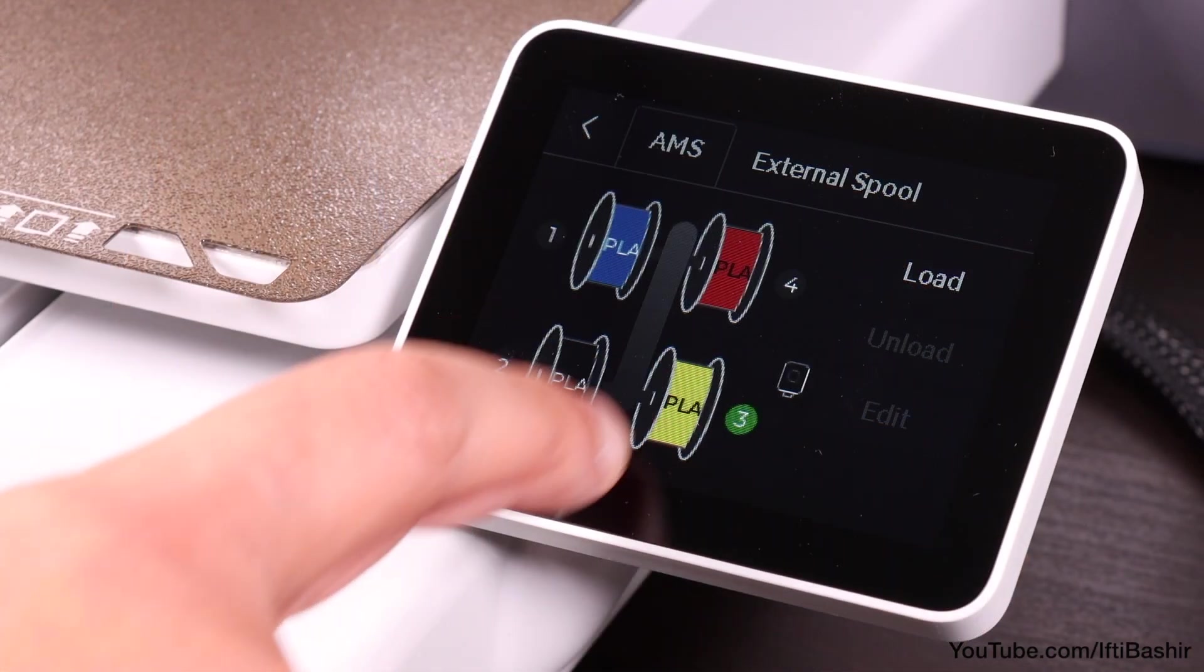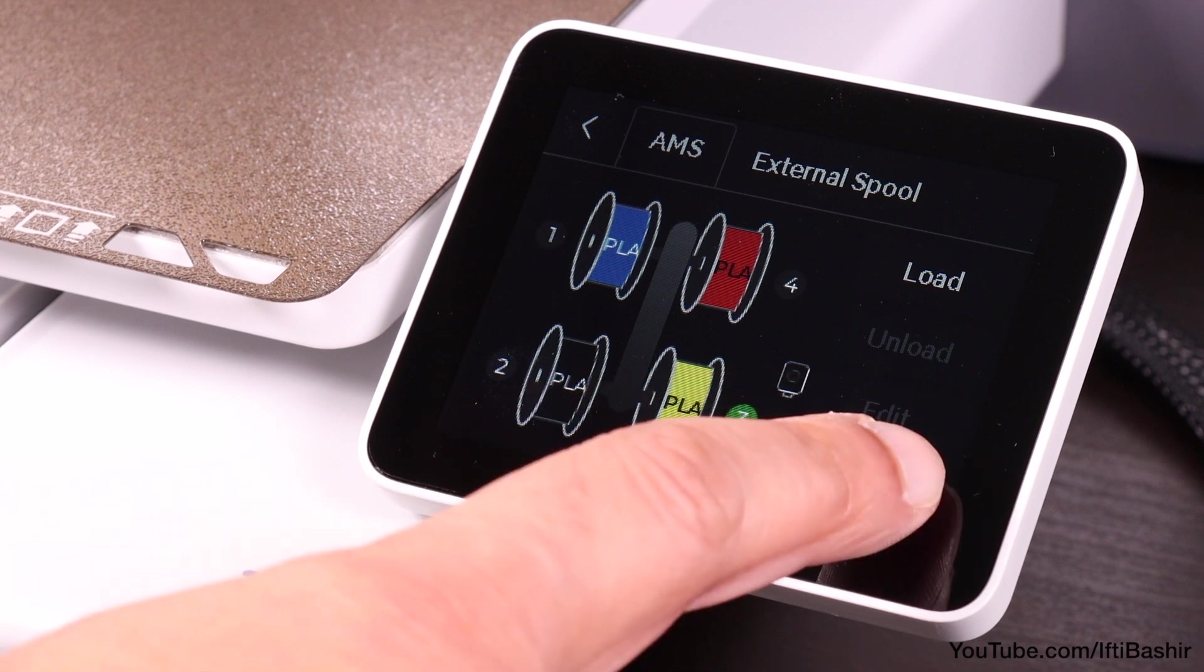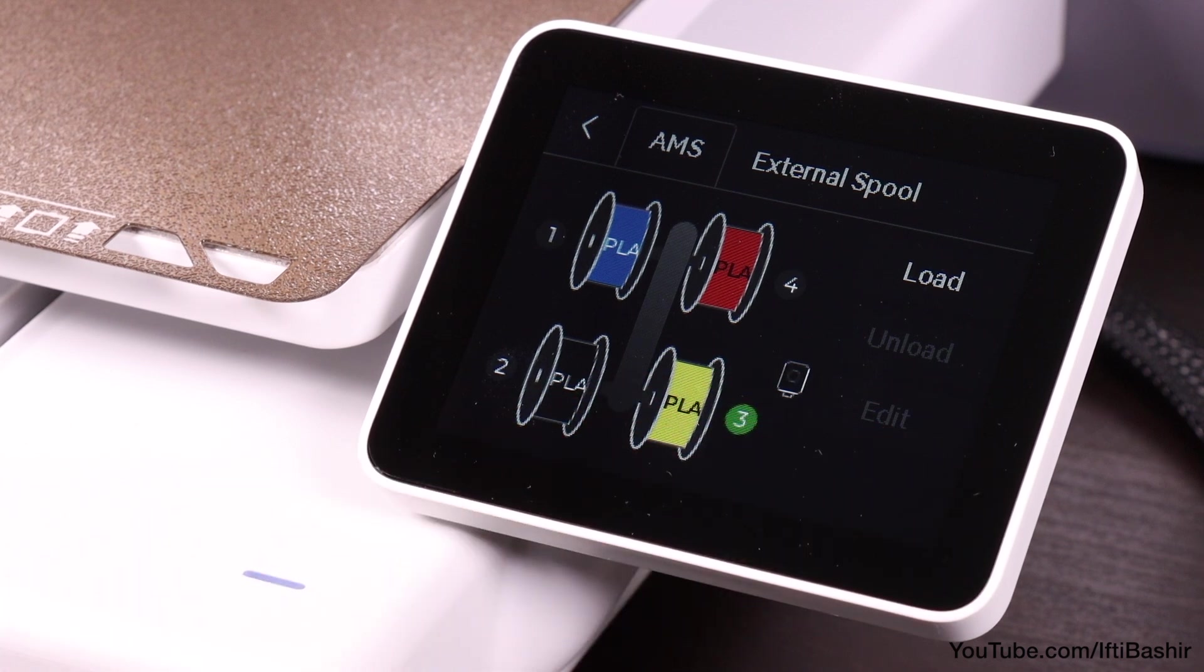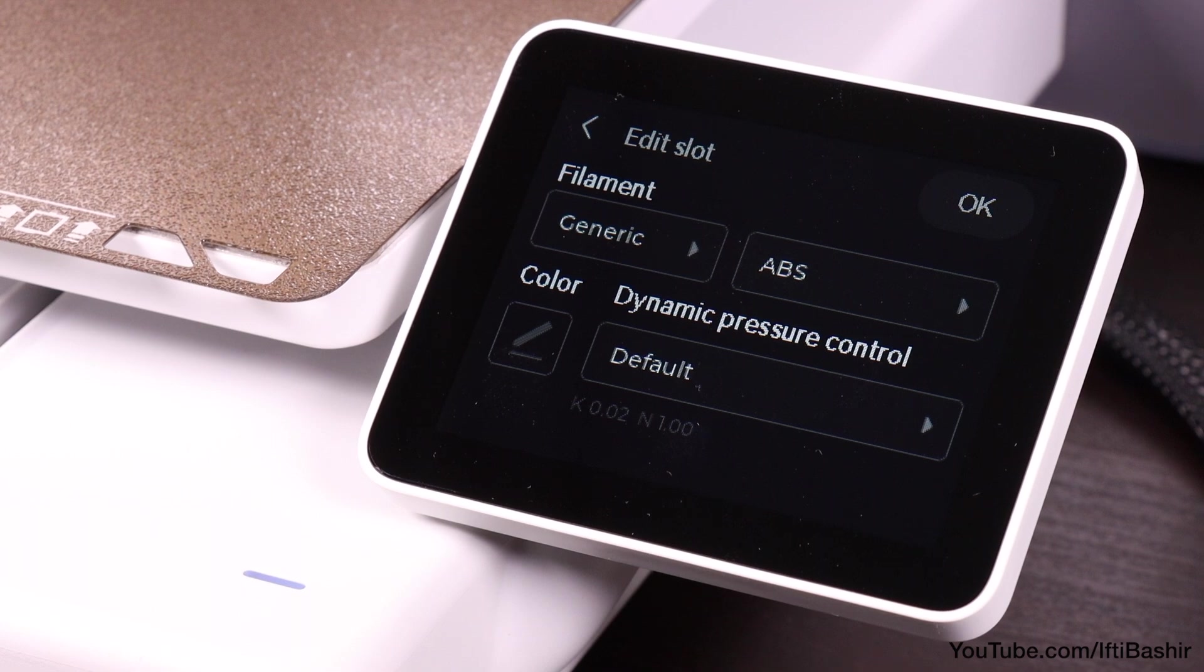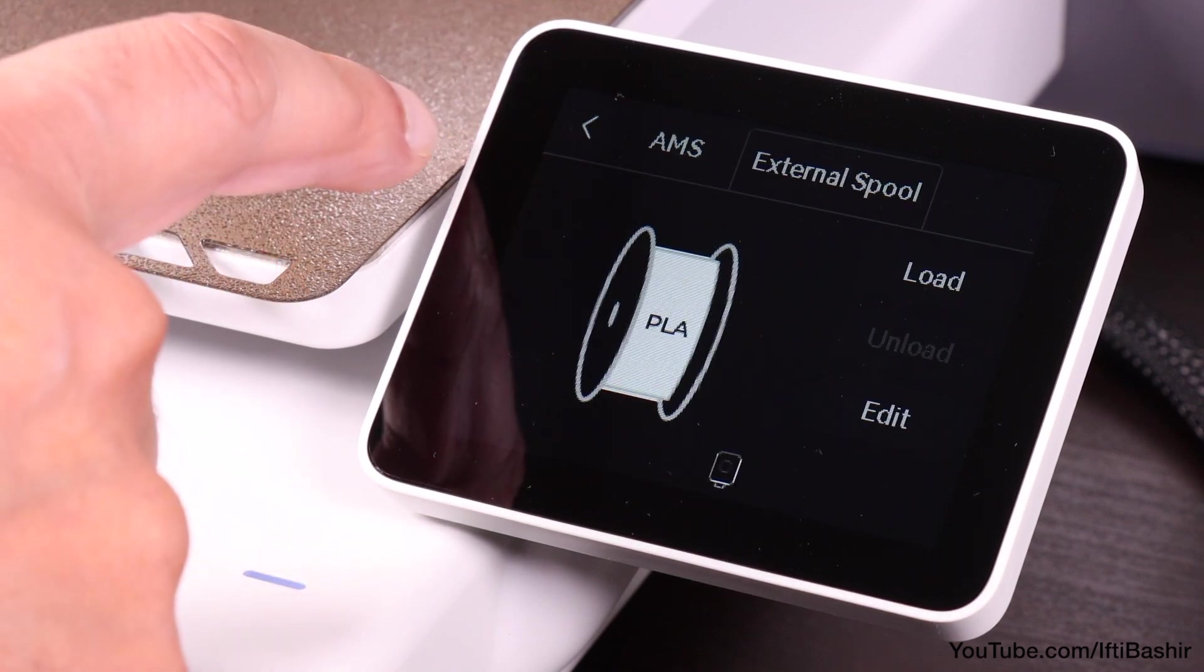Of course should you be using a non-bamboo branded spool with no RFID tag the edit button becomes active and just like the external spool you are able to set the filament details and colour manually.